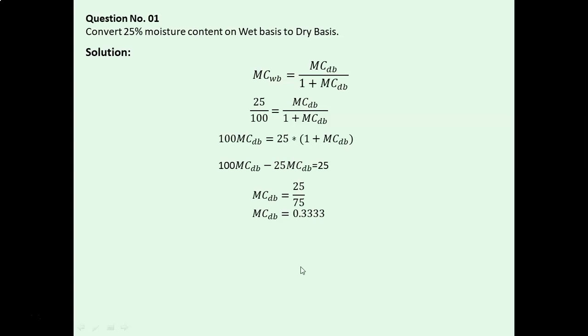As the moisture content on wet basis was given in percentage form, while writing the answer, we have to convert it into percentage form. So for converting it into percentage form, we have to multiply it with 100.